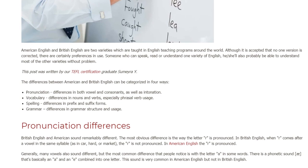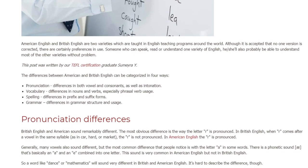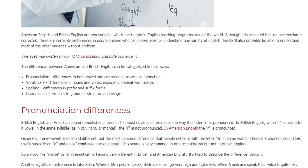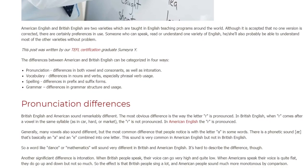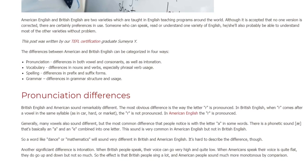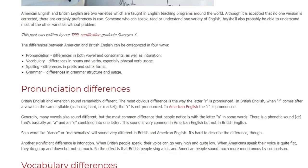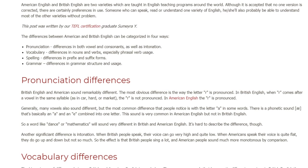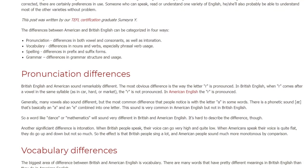Pronunciation Differences. British English and American English sound remarkably different. The most obvious difference is the way the letter R is pronounced. In British English, when R comes after a vowel in the same syllable, as in car, hard, or market, the R is not pronounced. In American English, the R is pronounced. Generally, many vowels also sound different.